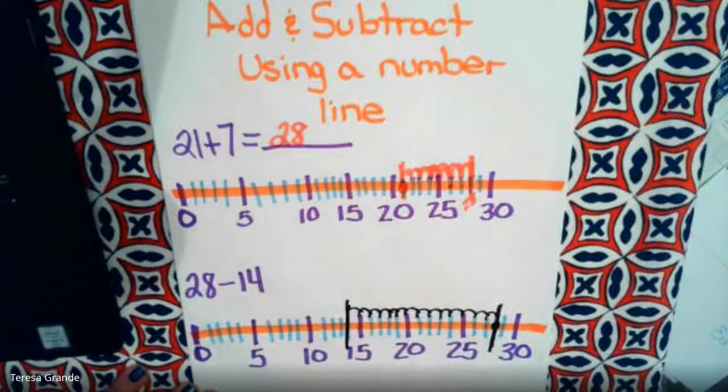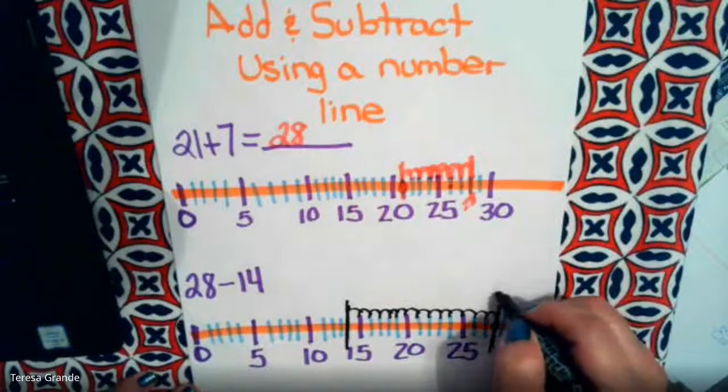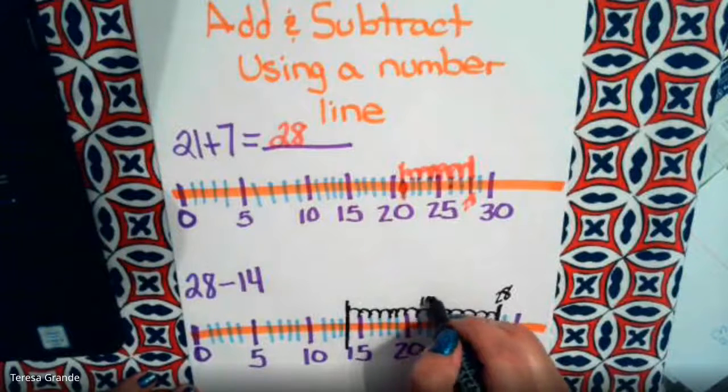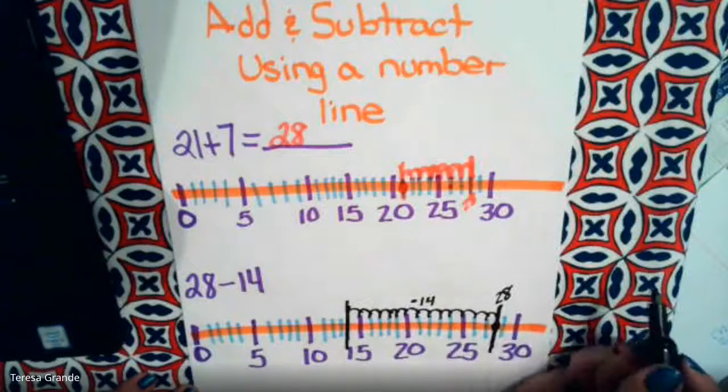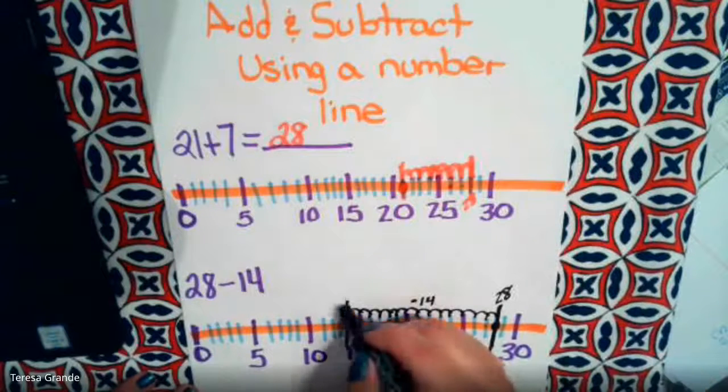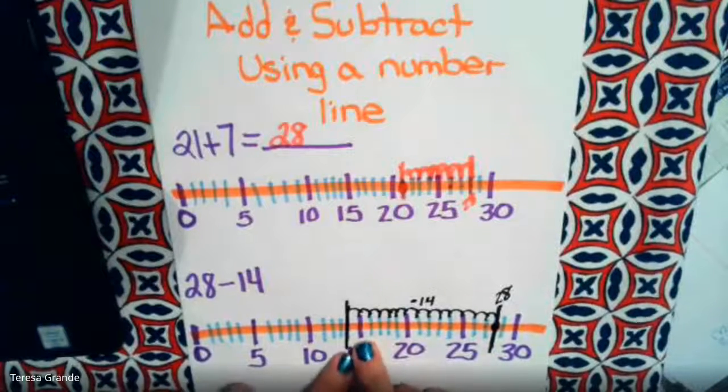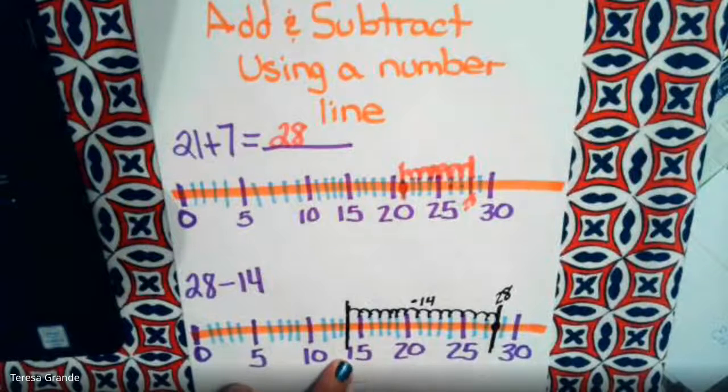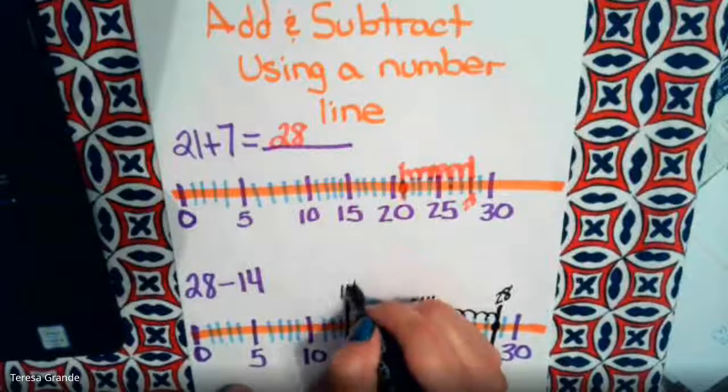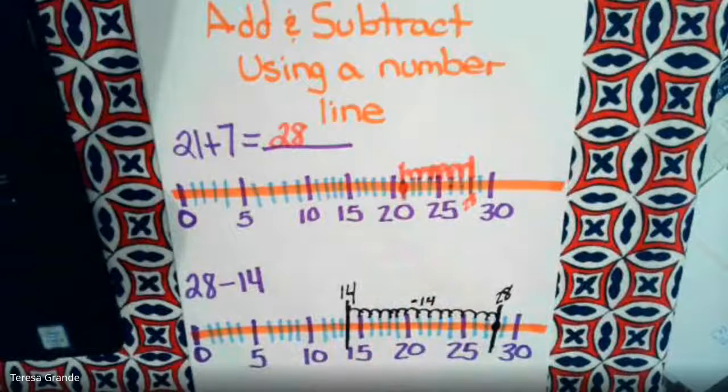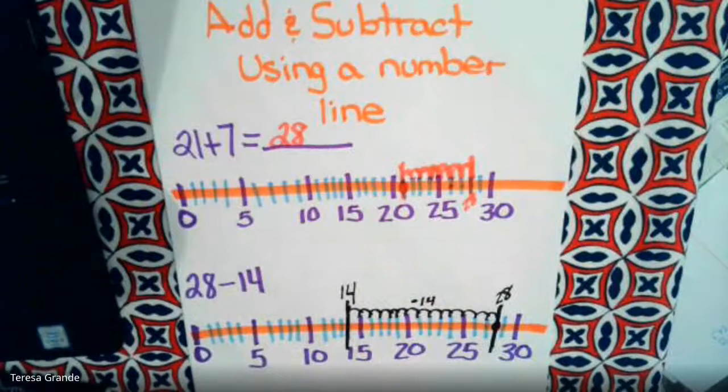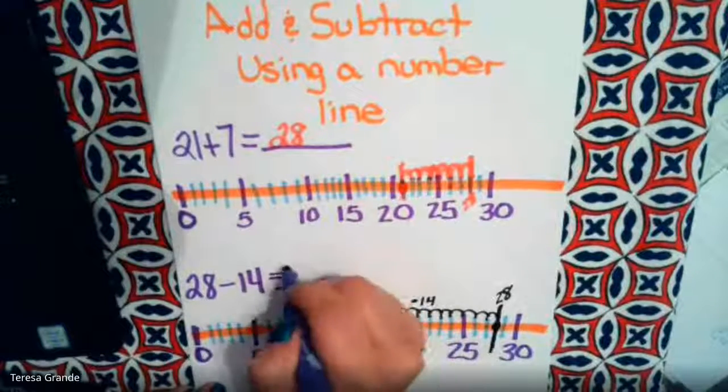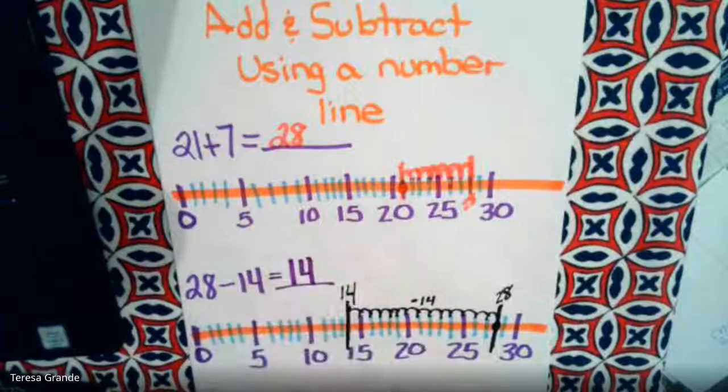It's right there. So this is the number 28, this is 14 subtracted, and what number did we end up on? What number comes before 15? That's right, it's 14. So 28 minus 14 equals 14.